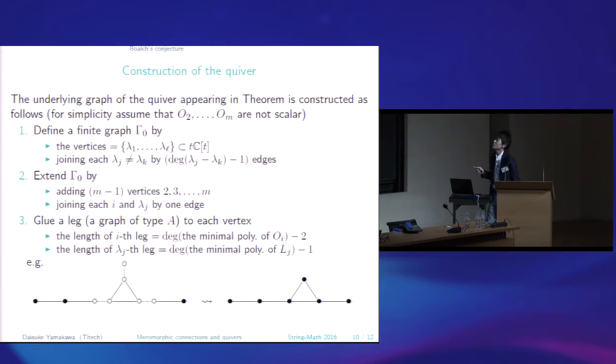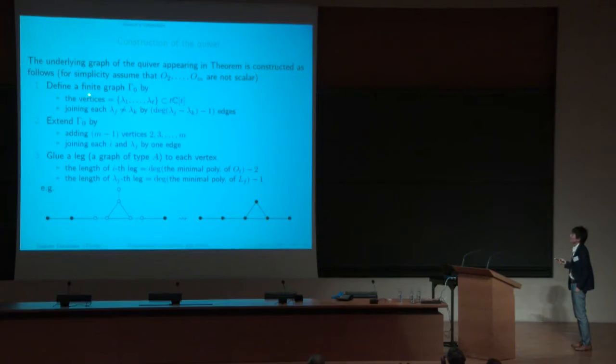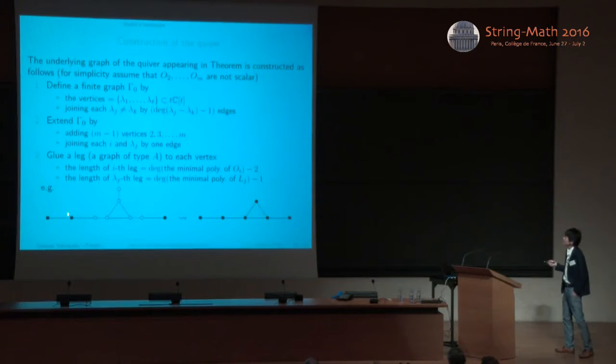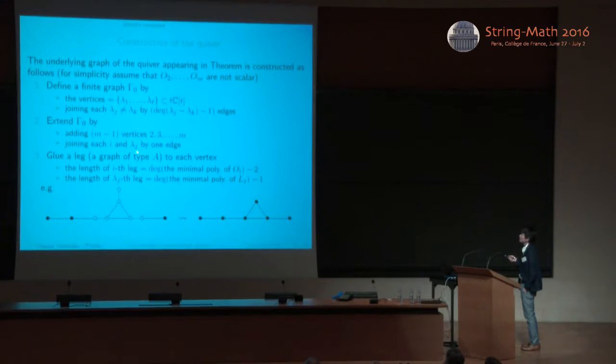Next, let me explain what kind of quivers appear in Boalch's conjecture. So the underlying graph of the quiver appearing in the theorem is constructed as follows. So first, define a finite graph, gamma zero, by the vertices being the set of scalar polynomials appearing in diagonal blocks and joining each pair of distinct vertices by degree of the difference minus one edges. So next, extend this graph by adding m minus one vertices. And so let us label these vertices by 2, 3, that are m. So corresponding to logarithmic poles. And join each new vertex and old vertex by exactly one edge.